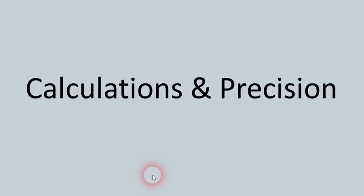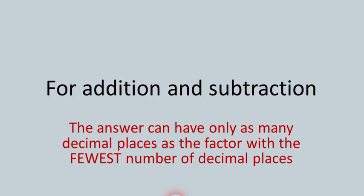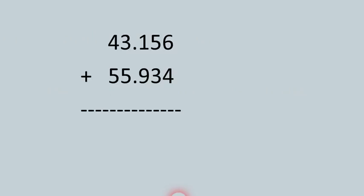In this lesson we're going to learn how to make calculations but express those calculations with the correct amount of precision — that's why we call this calculations and precision. We're going to do some math problems, starting with addition and subtraction. The rule we're going to follow is shown here in red: the answer to an addition or subtraction problem can only have as many decimal places as the factor with the fewest number of decimal places. Let's try a couple of examples.